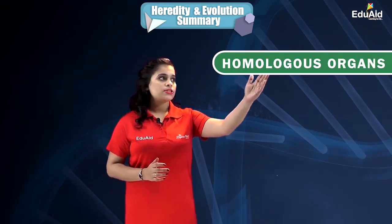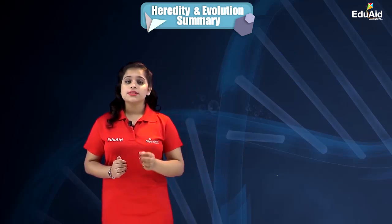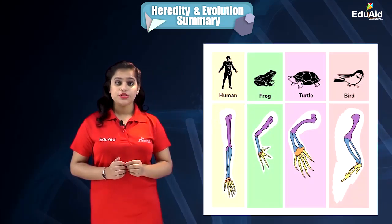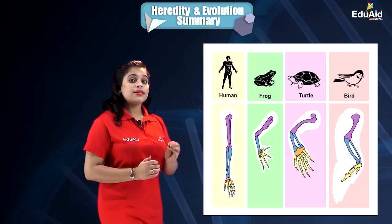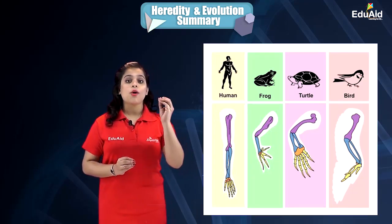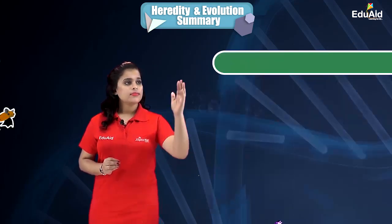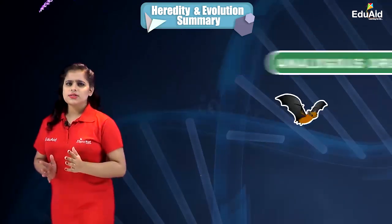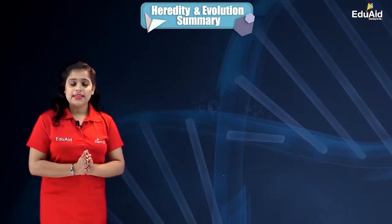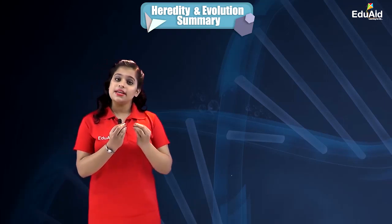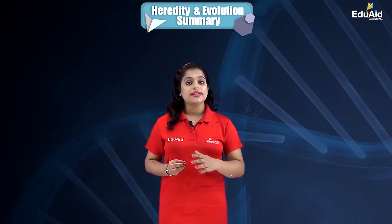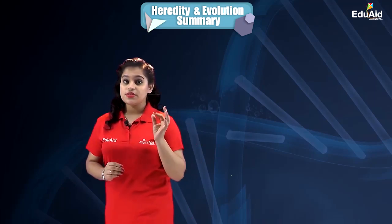After learning about evolution and classification, we discussed sources of evidence for evolution. Homologous organs provide evidence by suggesting all organisms share a common ancestor. Analogous organs provide evidence by suggesting that even organisms without a common ancestor can evolve similar structures to survive under prevailing environmental conditions.